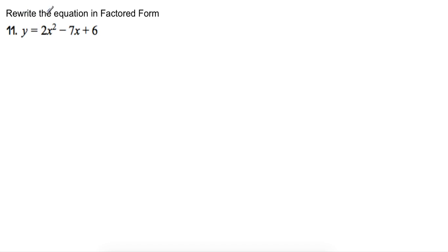Okay, in this problem we want to rewrite this equation in factored form. Right now it looks like it's in standard form. I'd like to get it into factored form. Remember I want it to look something like A times X minus R1 times X minus R2. And in order to do that I basically just am going to have to factor this.